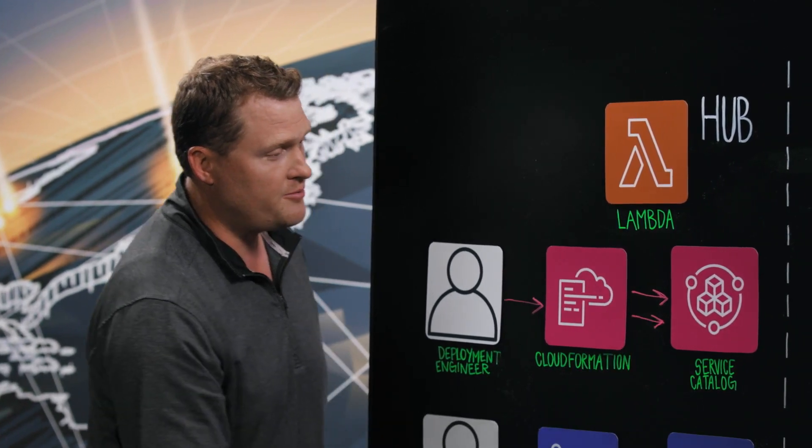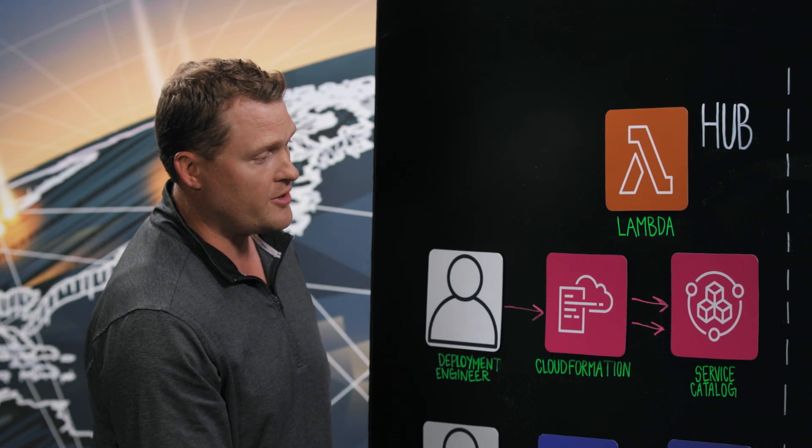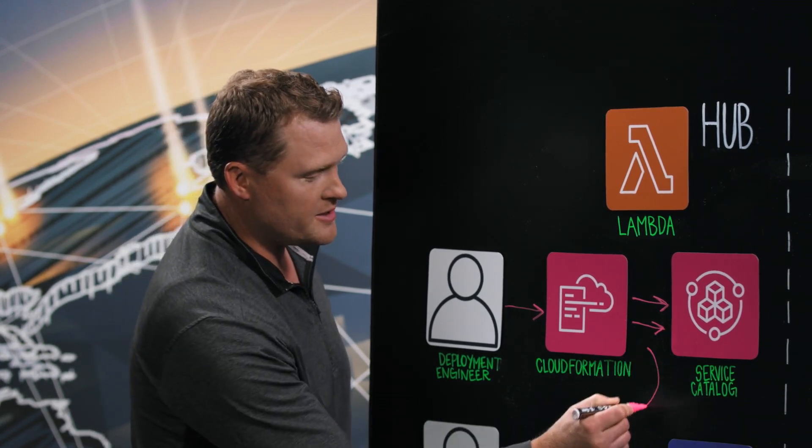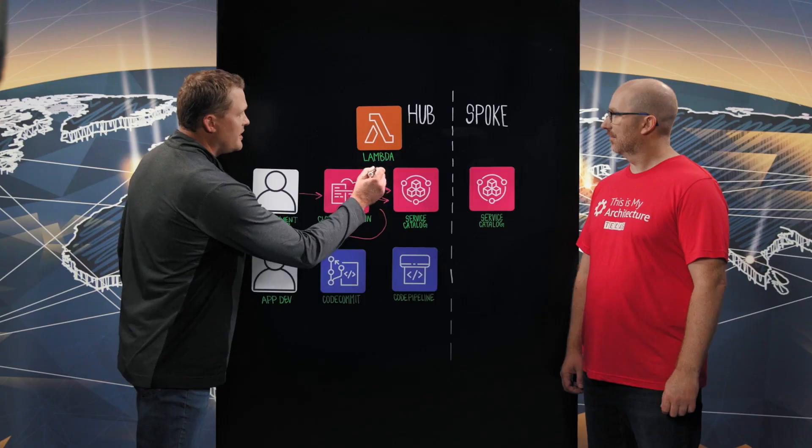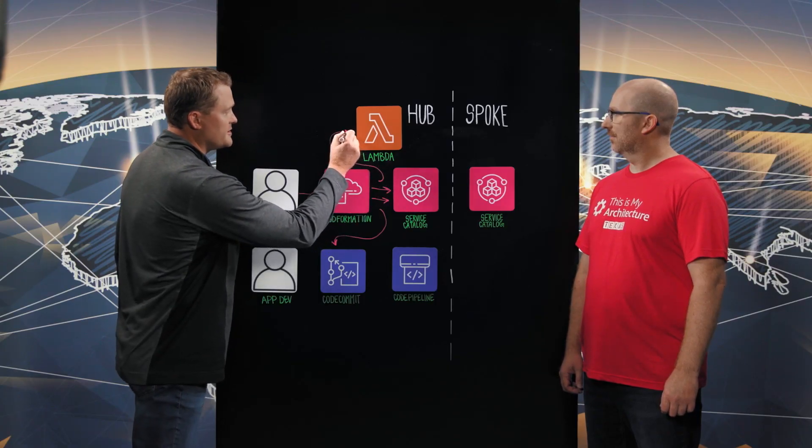So we start with our deployment engineer, and what they do when we conceptualize a new account, or business unit, or some need for a new account, is in the hub account they'll deploy a CloudFormation. And the CloudFormation is really doing four things: it's creating a Service Catalog portfolio for that specific business unit account, associating products that are going to be deployed later in that spoke account underneath that portfolio, creating a pipeline for product updates in a later stage, and also calling a Lambda as a custom resource, which is doing a lot of the magic behind the scenes.